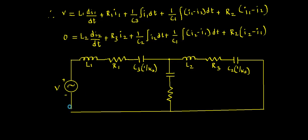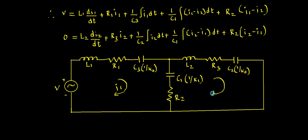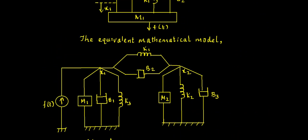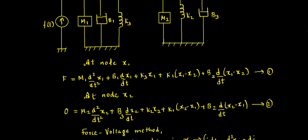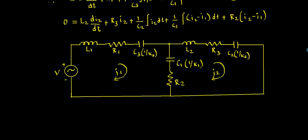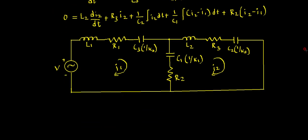Let me join these two things. C1 is labeled as C1 (= 1/k1) and the resistor is R2. In the first loop the current flowing is i1, and in the second loop the current flowing is i2. This is the ultimate equivalent electrical network for the given mechanical system. I have considered this numerical step by step and explained everything in detail. If there are any doubts, please let me know in the comment section — thank you for watching.